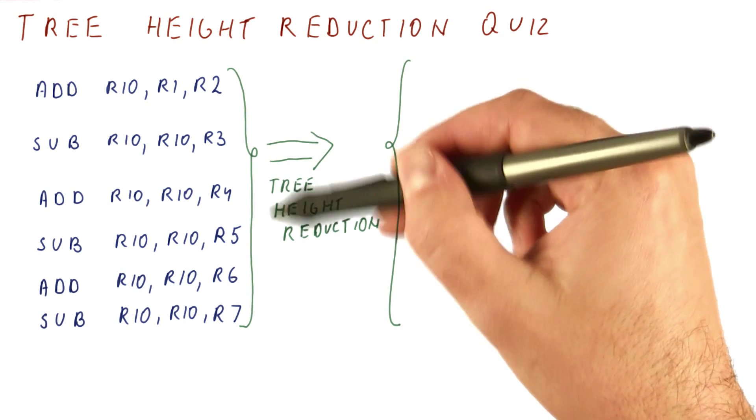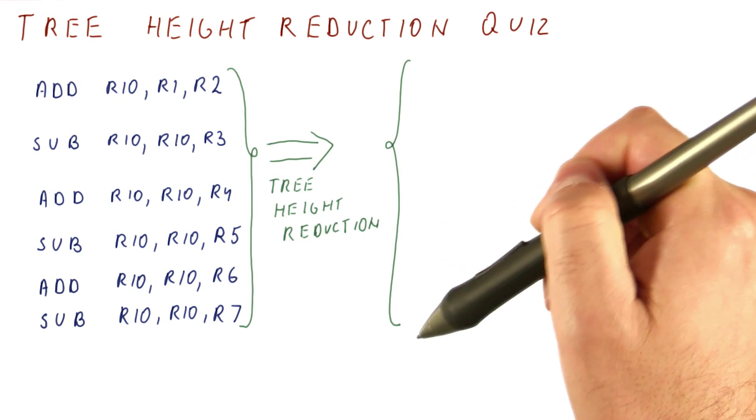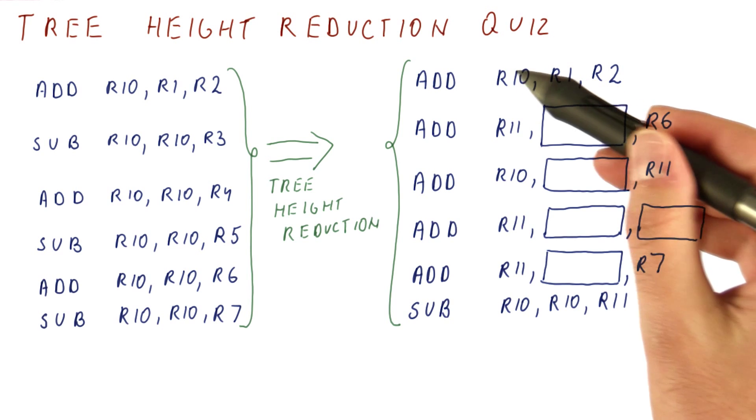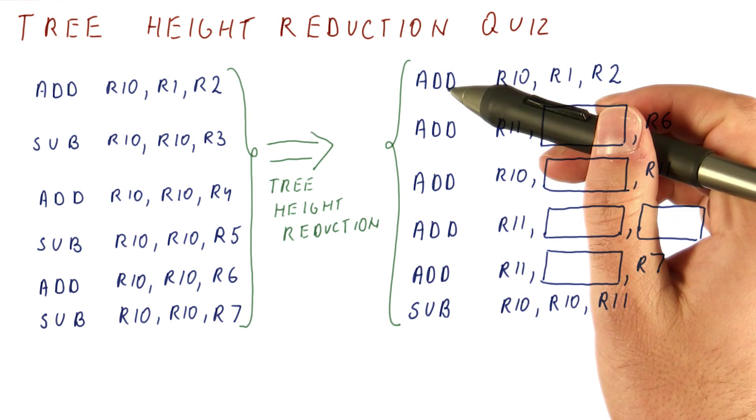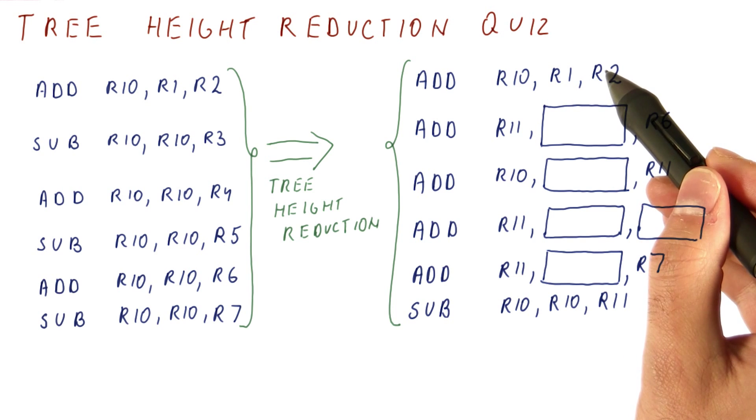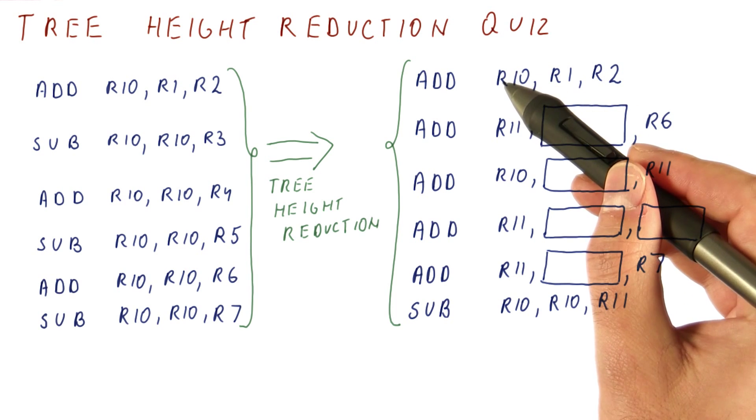If we now do a tree height reduction on this, what do we get? I already pre-populated most of the answer for you. So we're still going to add R1 and R2, and put the result in R10.